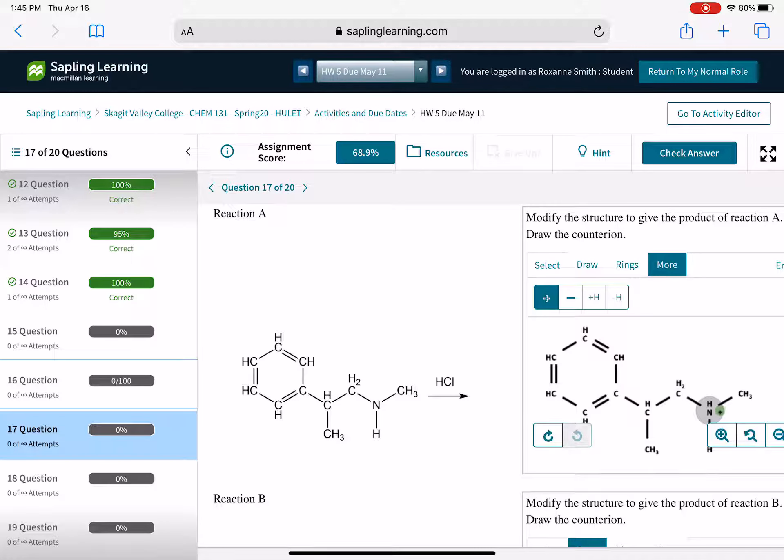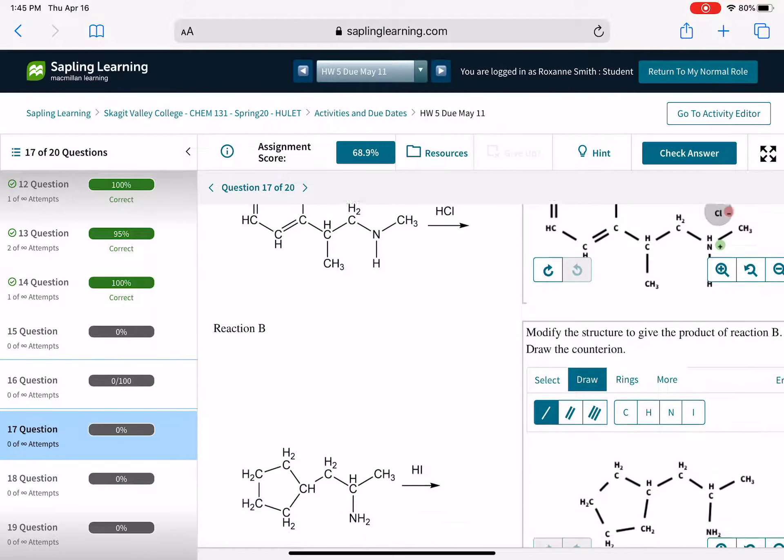Don't forget the positive charge. And then in the directions, notice it says modify the structure, draw the counter ion. The counter ion is just referring to what's left over when the hydrogen moves from HCl over to the nitrogen. So Cl minus is the counter ion for this one.